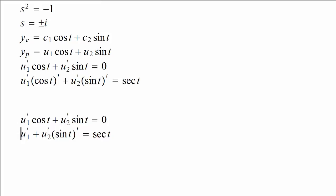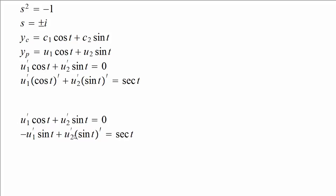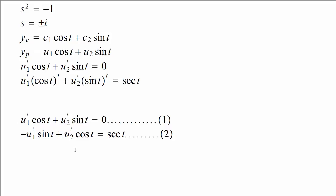These two equations are quite friendly. We can use the method of elimination. Multiplying equation one by sin(t) and equation two by cos(t) and adding them up — the derivative of cos(t) is -sin(t) and the derivative of sin(t) is cos(t) — the u₁' terms cancel. We can also make use of the Pythagorean identity.